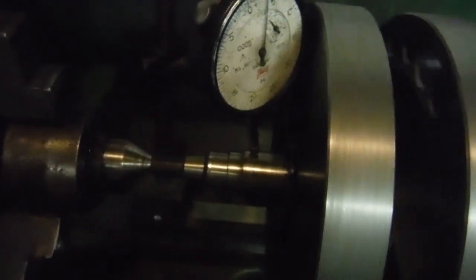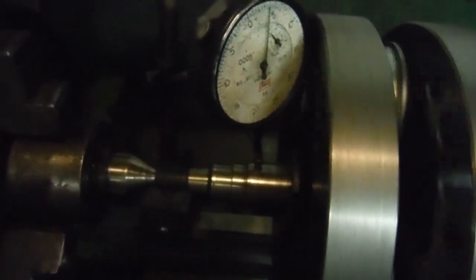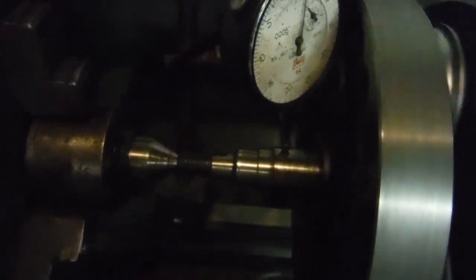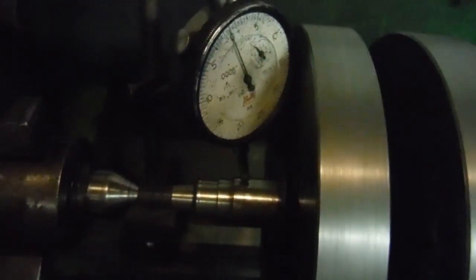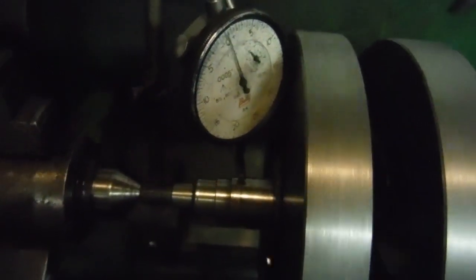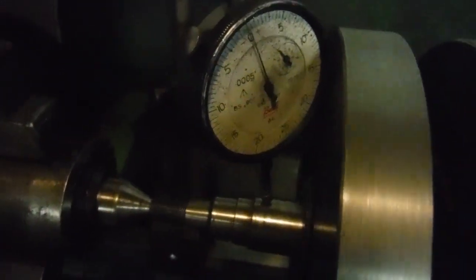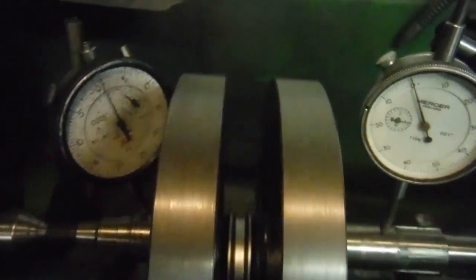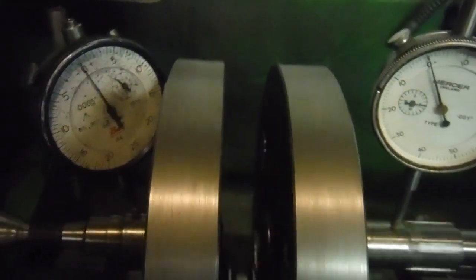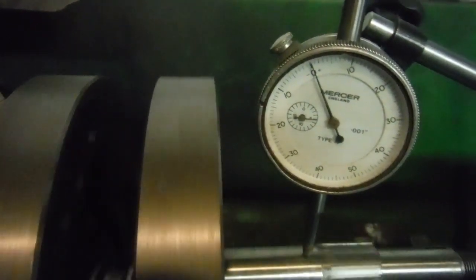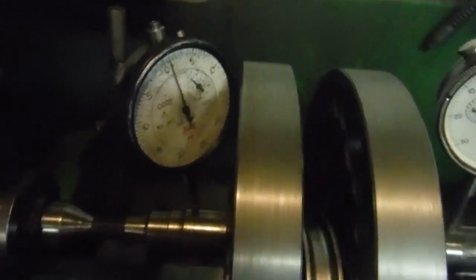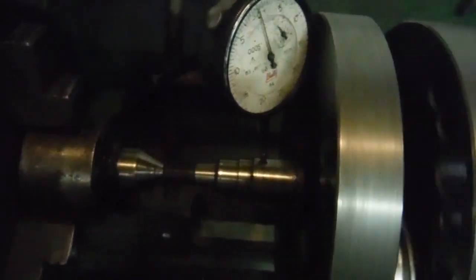I can only think it must be perhaps wear on the timing side shaft itself, which is probably unlikely, or the fit of it through the flywheel which there's not much can be done about that. We've got four thou there, we've got half a thou there that we can take off because they are actually moving together. That knocks it down to three and a half thousandths of an inch.